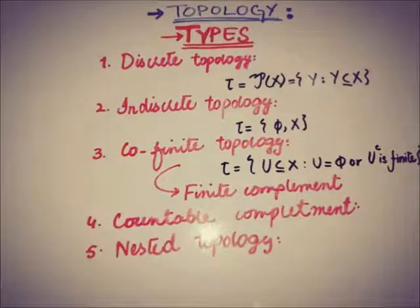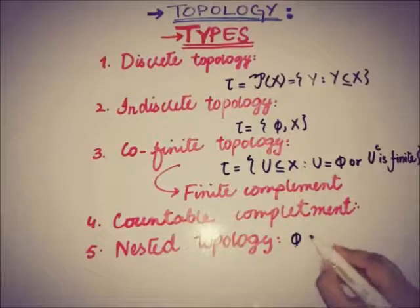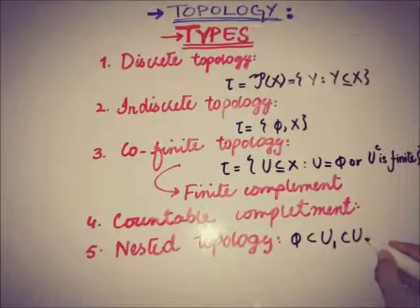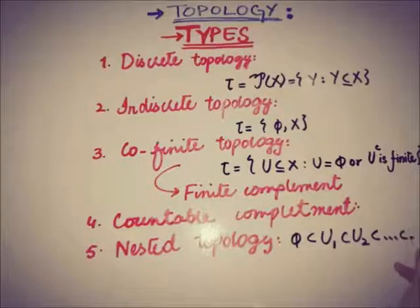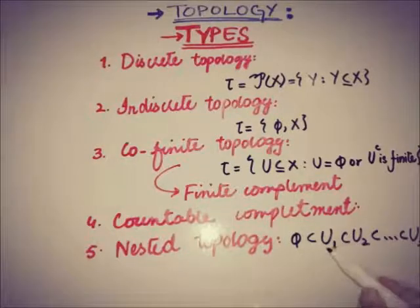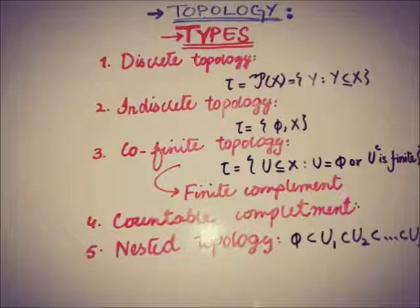A nested topology satisfies the nested property. It is of the form where phi is a subset of U1, and U1 is a subset of U2, and so on, where U1, U2, U3 are all subsets of X. So a nested topology is a type of topology that satisfies the nested interval property.